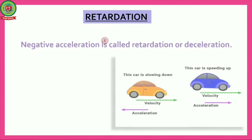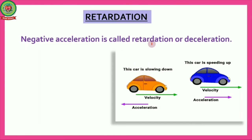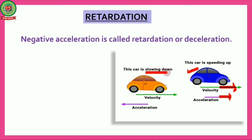Negative acceleration is called retardation or deceleration. Since acceleration is a vector quantity, it depends on direction. As shown in the two pictures: the first car is speeding up — its velocity increases, so its acceleration is positive (accelerated motion). The second car is slowing down — its velocity decreases, so acceleration becomes negative, i.e., in the opposite direction. This negative acceleration is called retardation.